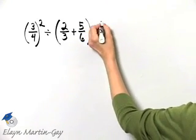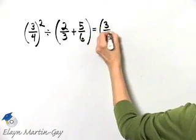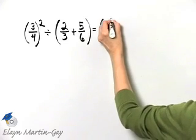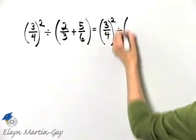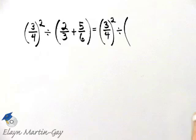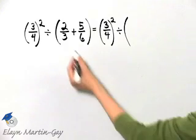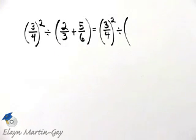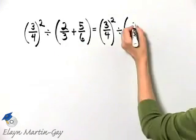That is then three-fourths squared divided by... Now here I'm adding fractions, so I have to have the same denominator. What is the least common denominator? It is six.